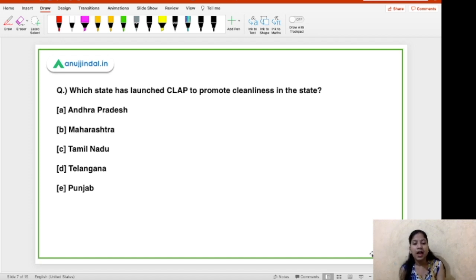Let's begin today's current affairs with this first question. And the question is, which state has launched CLAP to promote cleanliness in the state? So you have Andhra Pradesh, Maharashtra, Tamil Nadu, Telangana and Punjab in the options. Out of these five options, the right answer is option A, Andhra Pradesh. And you can easily memorize this thing by memorizing the full form of CLAP. The full form of CLAP is Clean Andhra Pradesh.